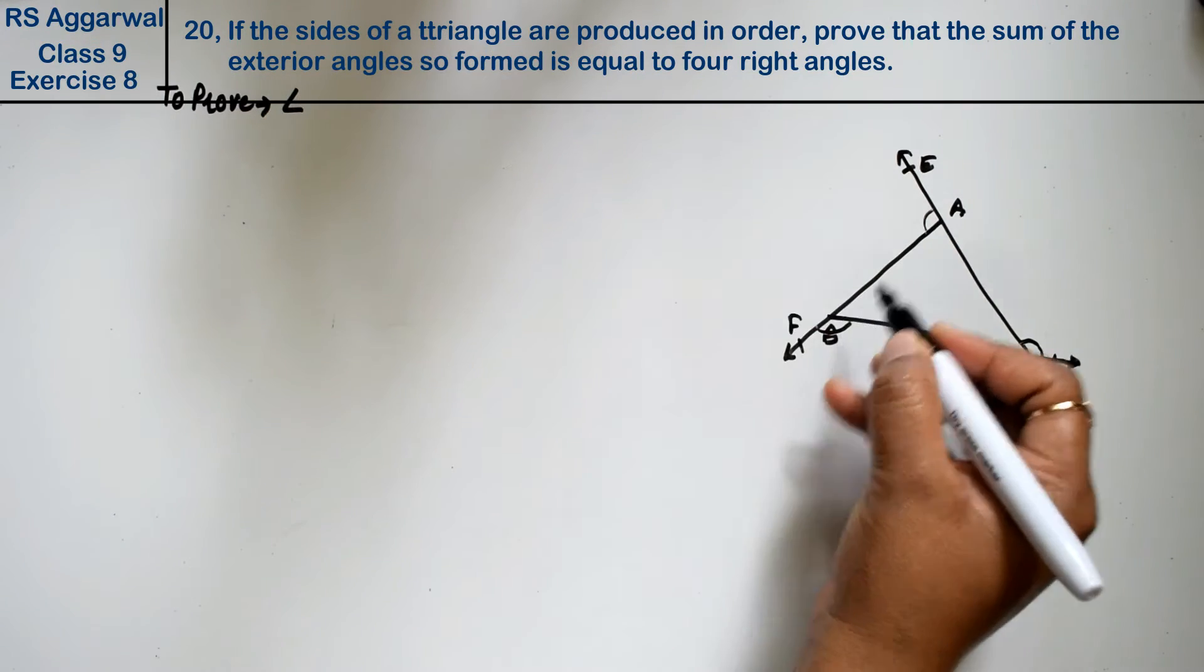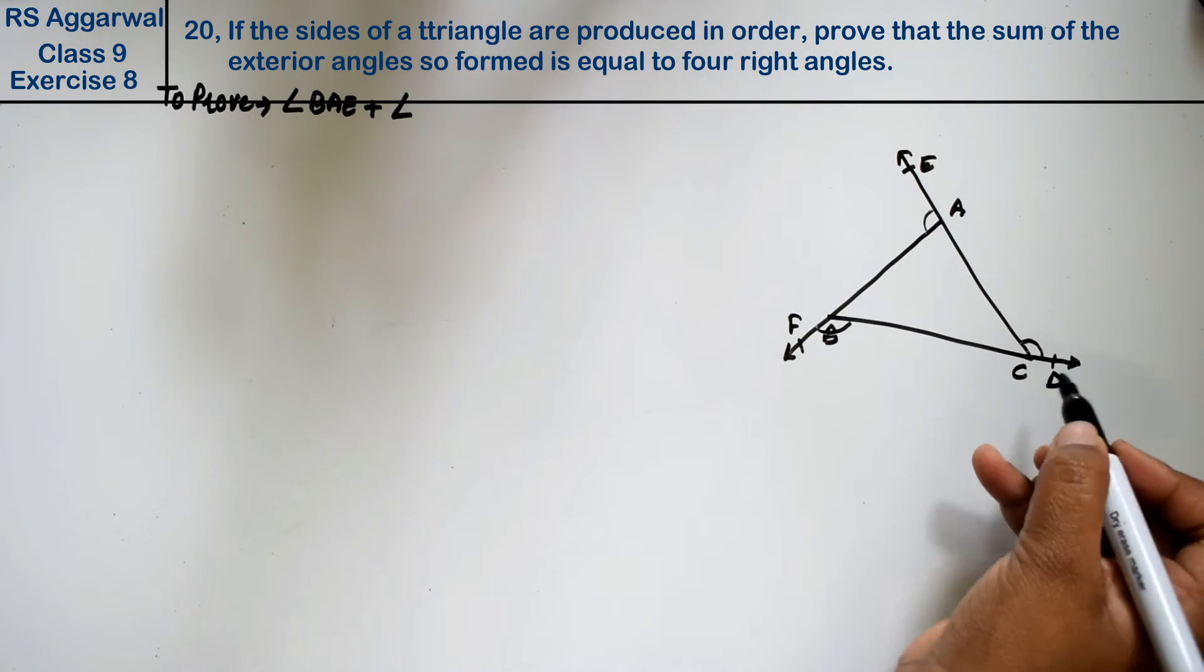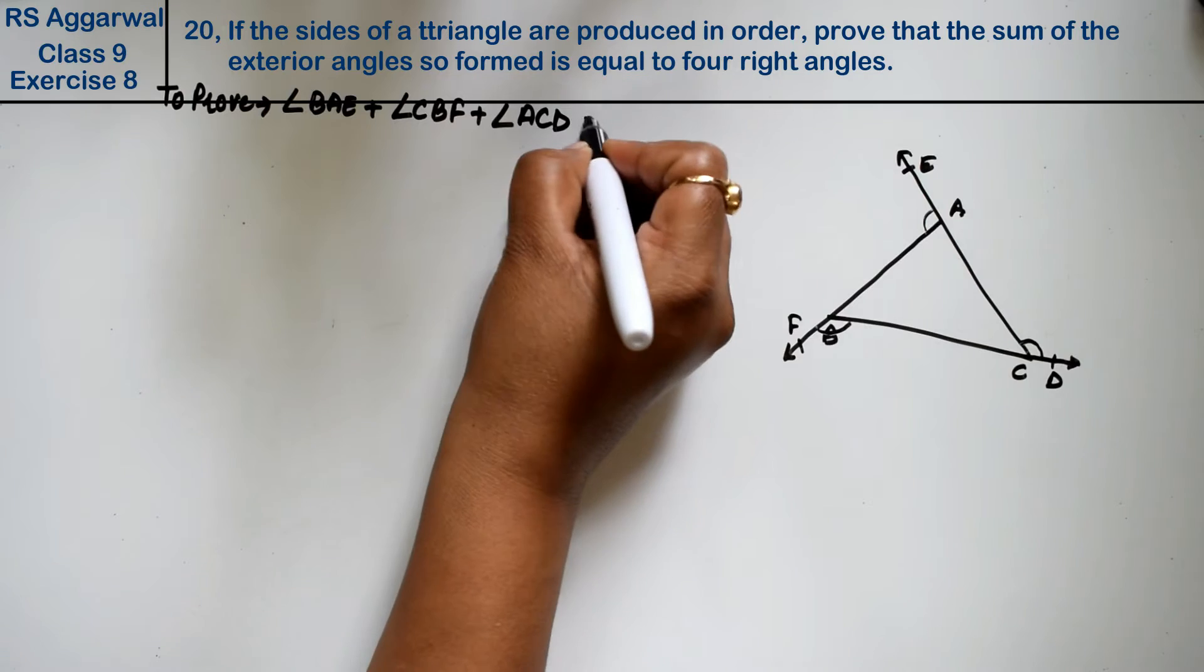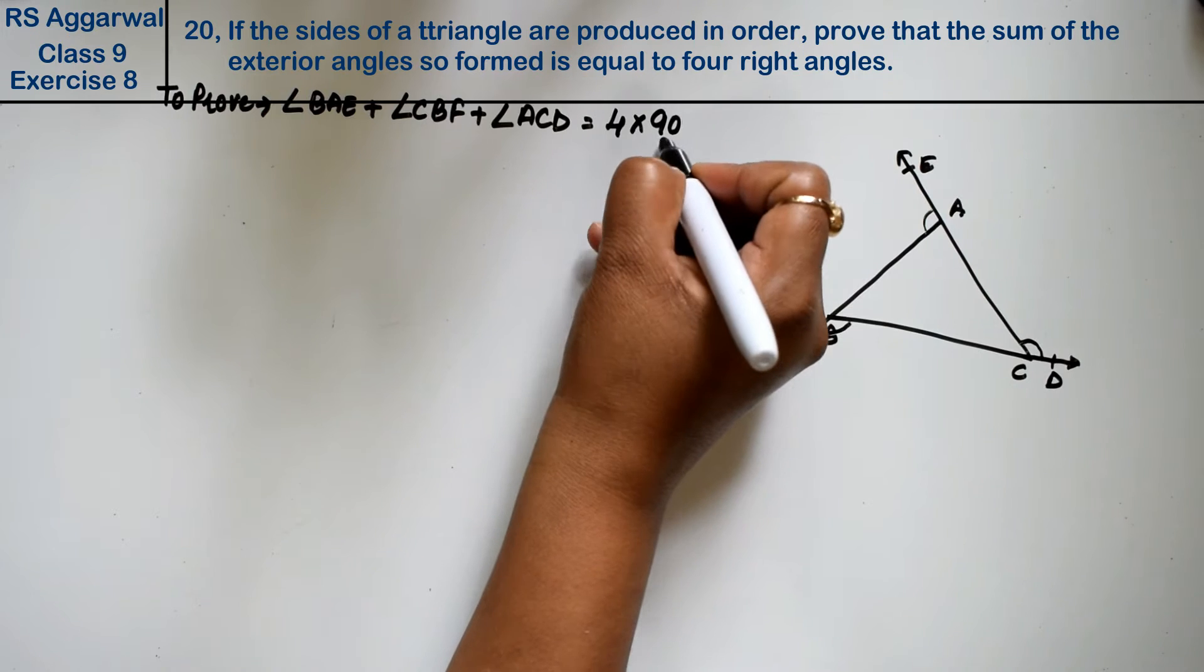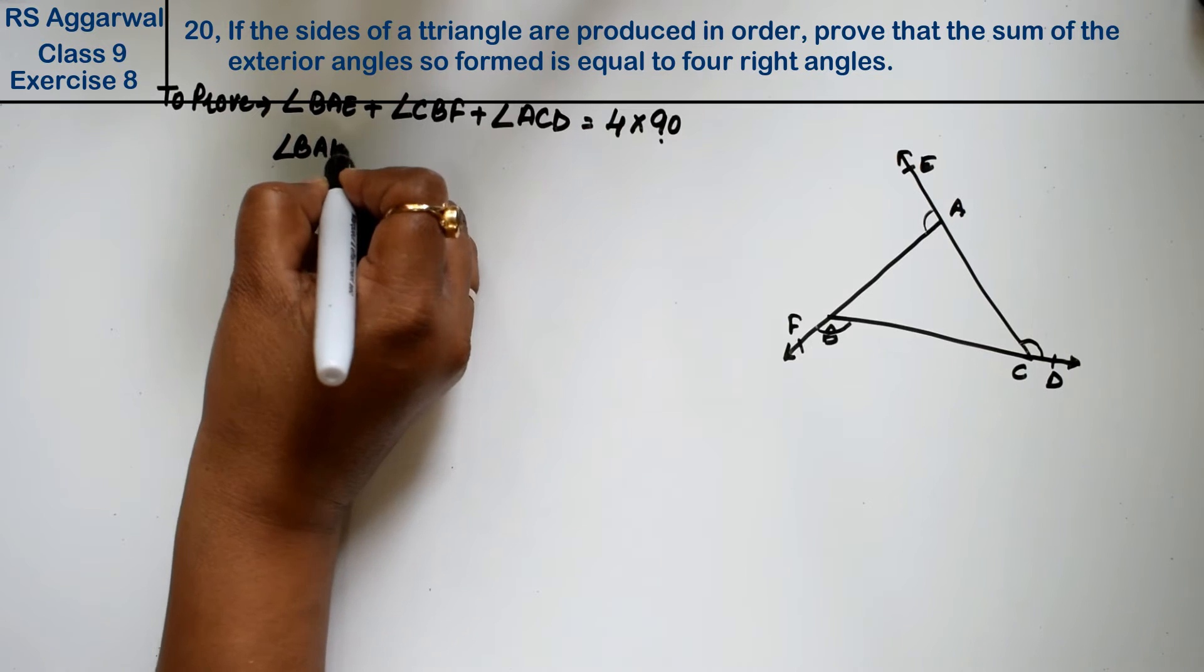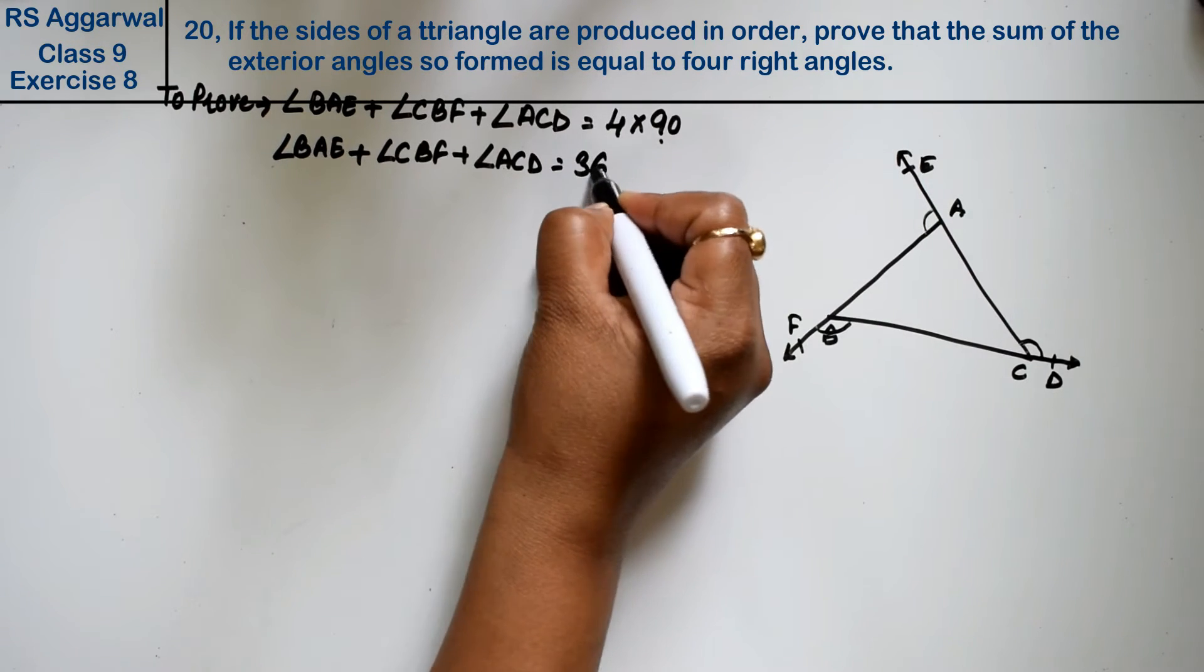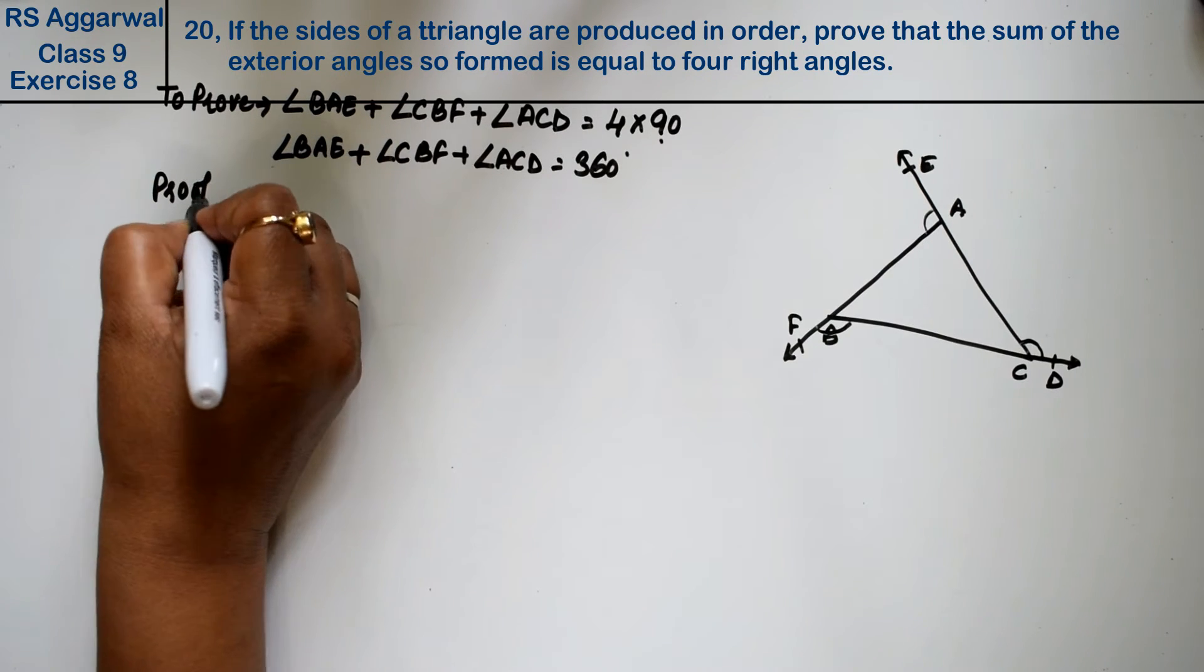To prove: angle BAE plus angle CBF plus angle ACD is equal to four right angles. Four into 90 degrees, which means angle BAE plus angle CBF plus angle ACD equals 360 degrees. Now we have to prove this.